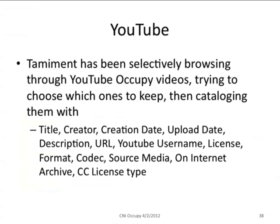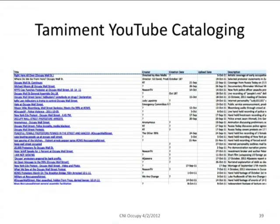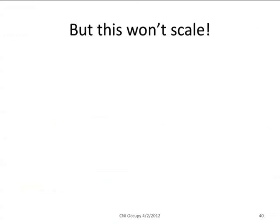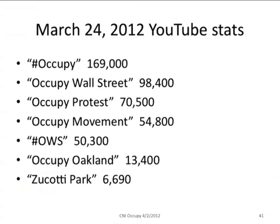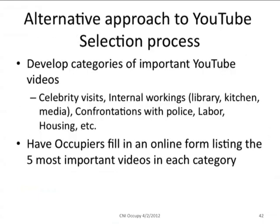The last subproject is YouTube. The Tamiment collection at NYU has been selectively browsing through YouTube Occupy videos, trying to choose which ones to keep and then cataloging them with fields of metadata. But this is not going to scale. The last time I checked, there were 169,000 videos with the tag hash Occupy. Someone is not going to go through each of those and download and catalog them — it's just not possible.